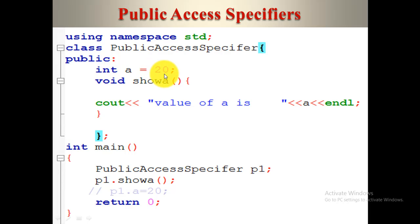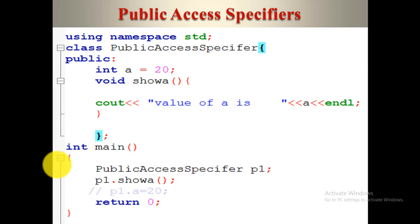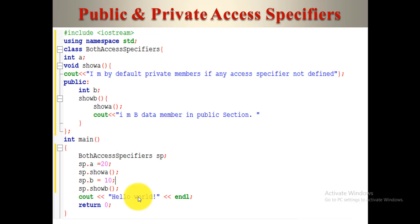Here is a simple code where we create a class named 'public access specifier'. In the public section we create a variable int A and assign it the value 20, and a function void showA that prints the value of A. In the main section we create object p1 and call p1.showA — it executes accurately with no error. And if we assign the value outside the class as p1.A = 20, we can do that too, because A is a public member.